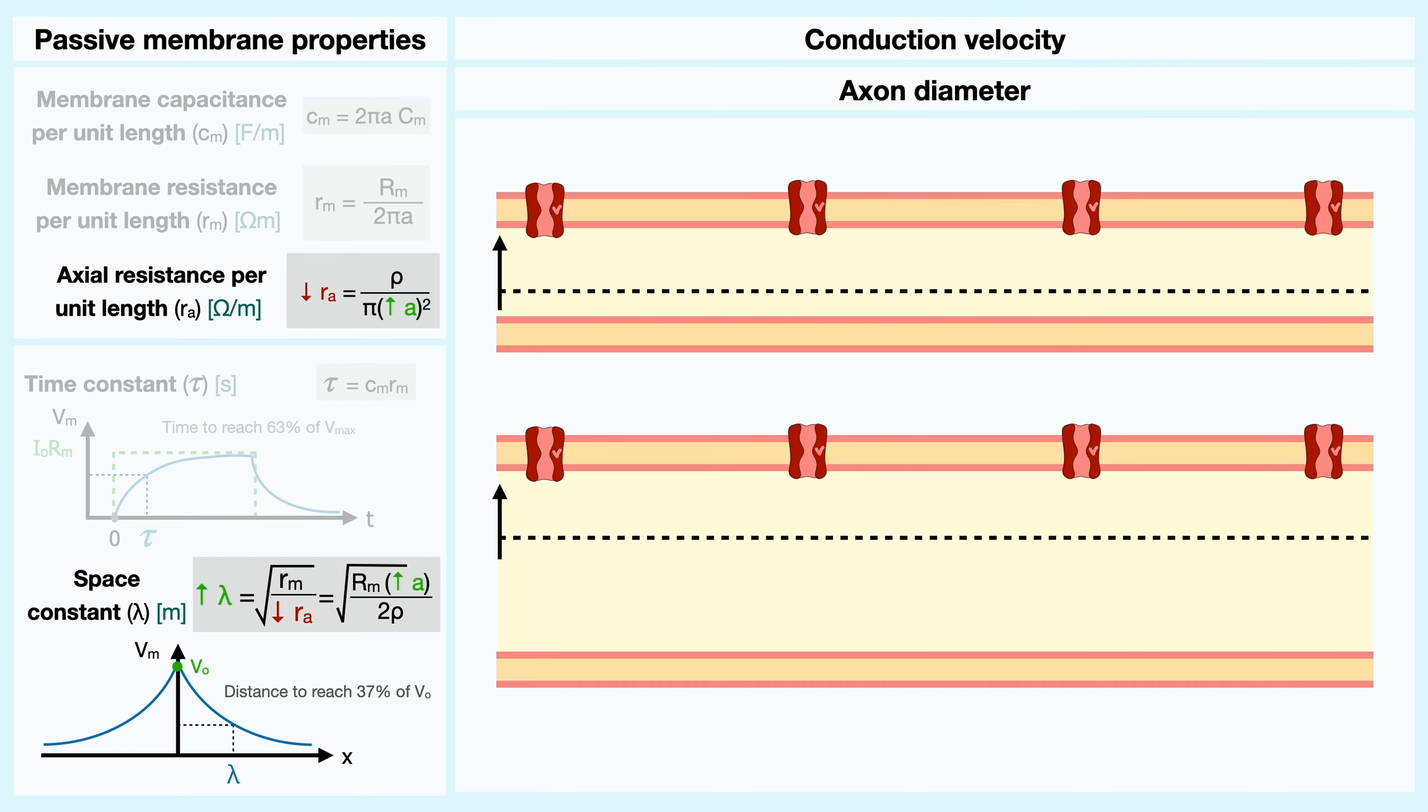If we imagine this dotted line as being the threshold to open voltage-gated sodium channels, when the most upstream channel opens, a higher value of lambda in the larger neuron will make so that the signal decays less in terms of distance, which will be able to reach and open channels at a further distance for the same amount of time.